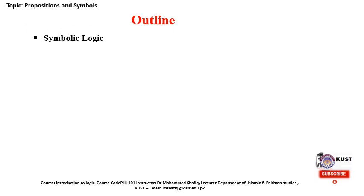The outline of today's lecture consists of two parts. The first part covers the definition of symbolic logic and what it is all about. The second part consists of propositions and symbols — what are the symbols, and what different symbols we use for different propositions. So let us start.